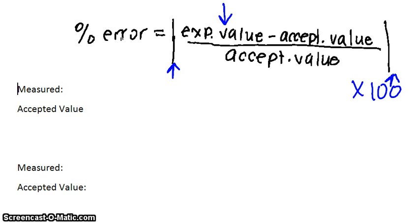So my first example is: you found the density of an object in a lab to be 5.67 grams per milliliter, and the actual accepted value is 5.14 grams per milliliter. We want to find the percent error in your measurement.